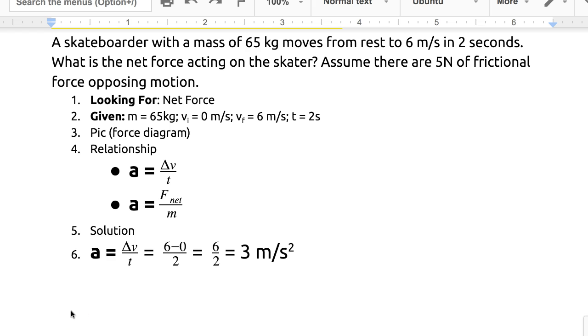So let's first calculate the acceleration. The skater went from 0 meters per second to 6 meters per second, so that change in velocity was 6 minus 0, or 6 meters per second, and it took the skater 2 seconds. So the acceleration was 3 meters per second squared, or 3 meters per second per second.